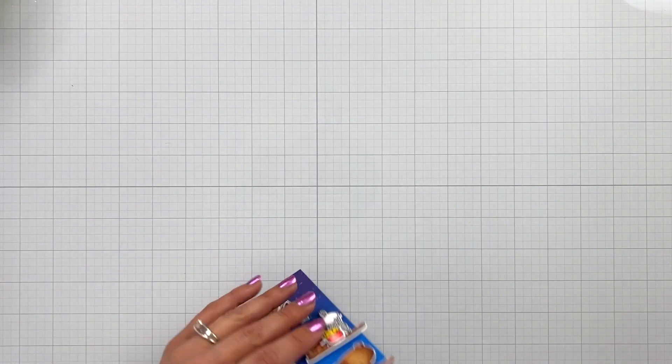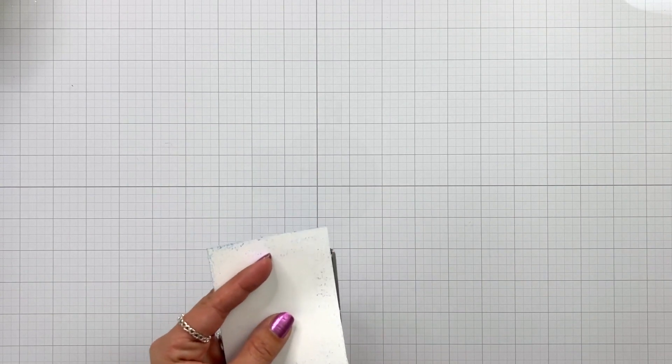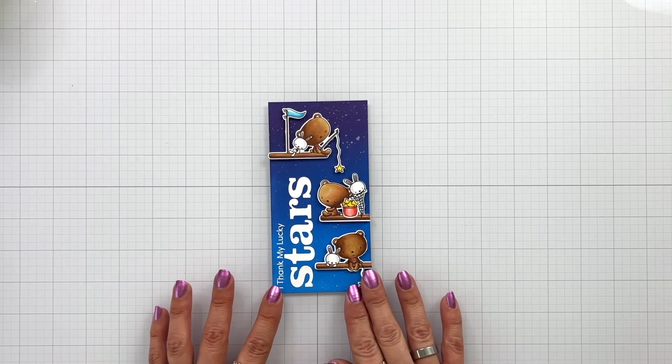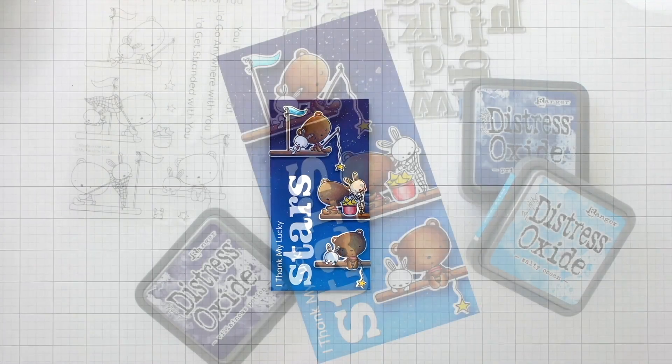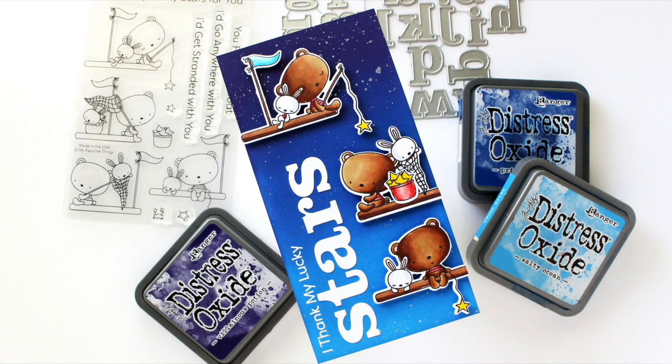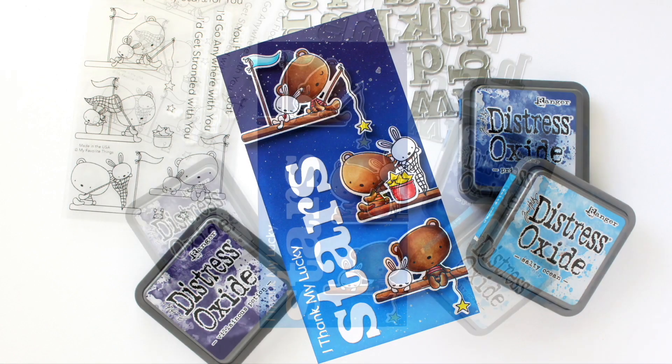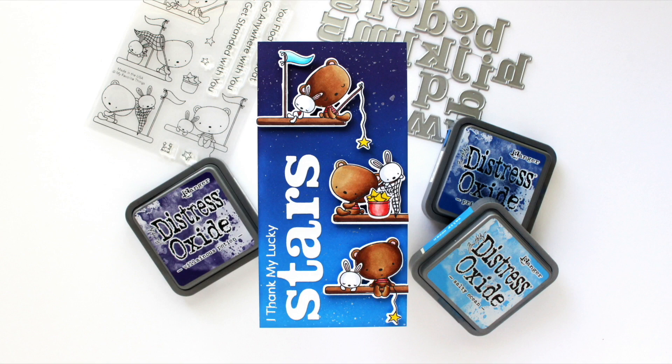Now that I have everything added I can flip that over and trim off that excess and add to a card base. So that is going to finish off my mini slimline card here. Thank my lucky stars and I think this would be a great card to give to a teacher for the end of the school year which is what I actually plan on doing. Thank you so much for joining me today. See you soon.